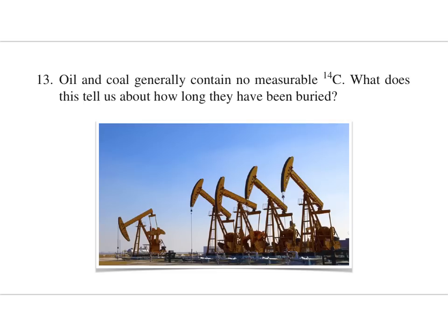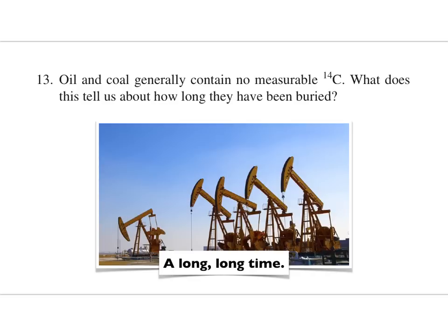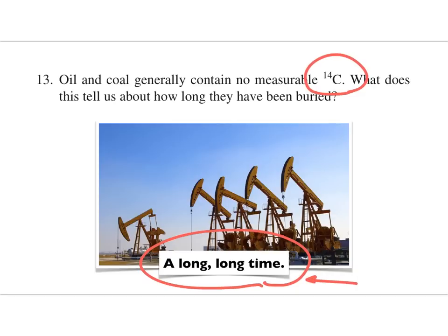Now think about this question: oil and coal generally contain no measurable carbon-14. What does that tell you about how long the oil and coal have been buried? If there's no measurable carbon-14, that means basically all the carbon-14 has decayed — and that means they have been buried a long, long time. No measurable carbon-14 means they've been buried more than about a hundred thousand years — enough half-lives that you're not going to be able to detect anything.